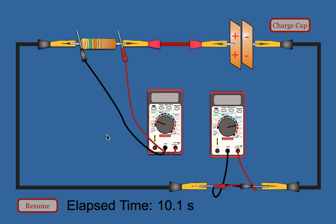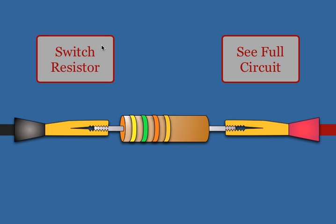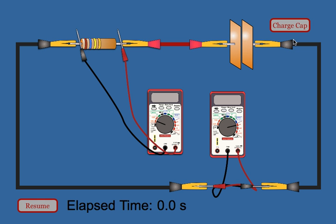Once you have completed this capacitor's discharge successfully, change the resistance value. It's good to have some resistors where yellow is the third stripe and some where orange is the third stripe. Do a total of four resistors — two orange and two yellow. Once you change your resistor to a new value, switch over to the full circuit, recharge your capacitor, and collect a new set of data for the new resistor.